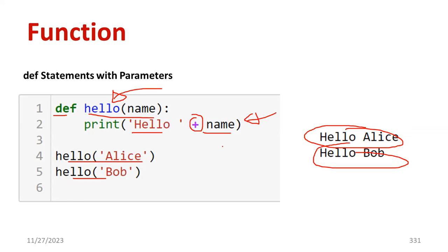So here you can understand: there is a keyword DEF, after which hello becomes the function. The function body is the print statement using the plus operator with the name. Hello is printed by default, and whatever name you type, the output will be displayed accordingly — hello Alice and hello Bob — so whatever name you type, it is going to be accepted.